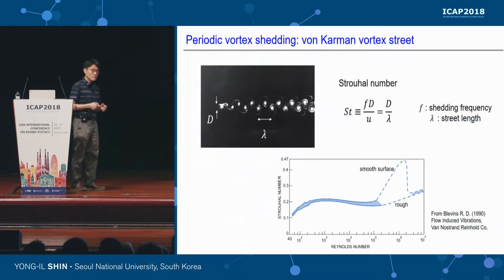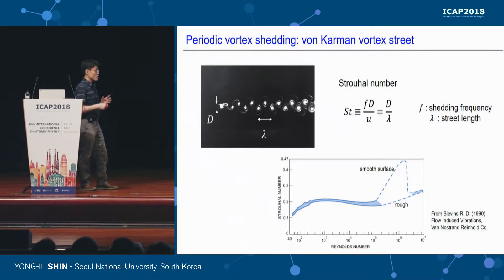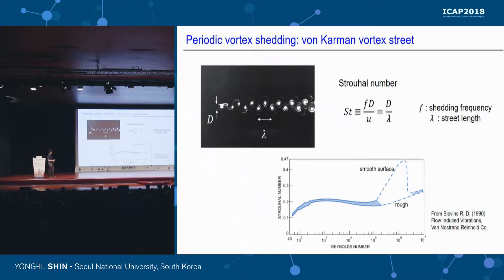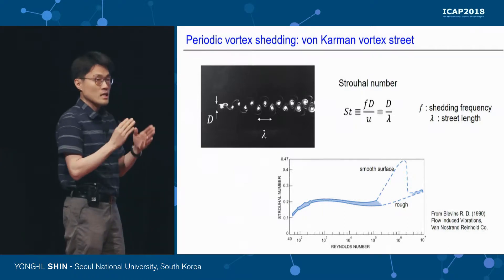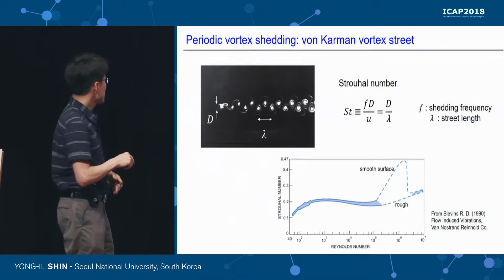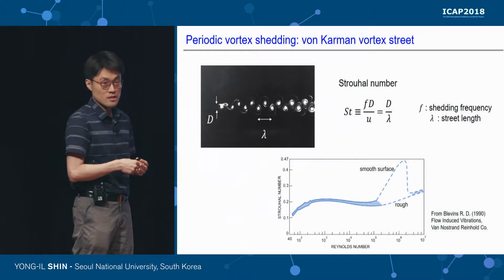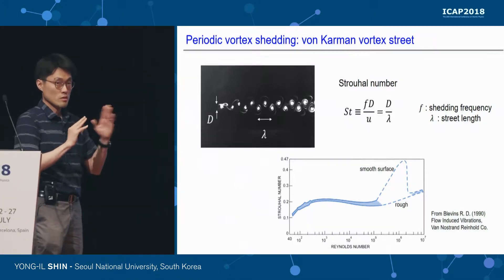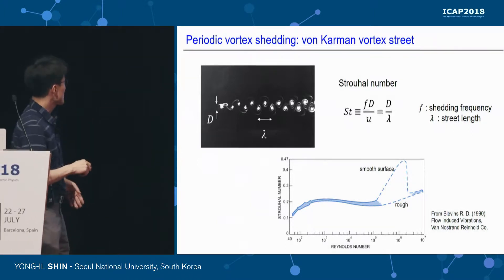For classical fluid, over a large range of Reynolds number from 50 to 10^5 or 10^7, the Strouhal number is almost constant at 0.2, which means the vortex spacing — the spatial periodicity of vortex shedding — is about five times the diameter of the moving object. It is a very universal behavior in terms of geometrical features.